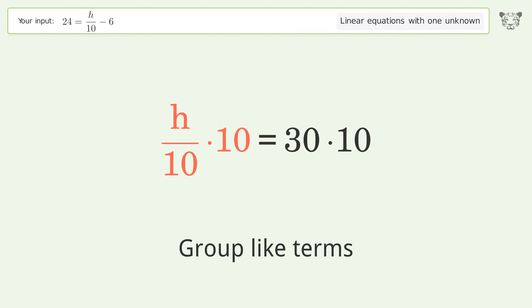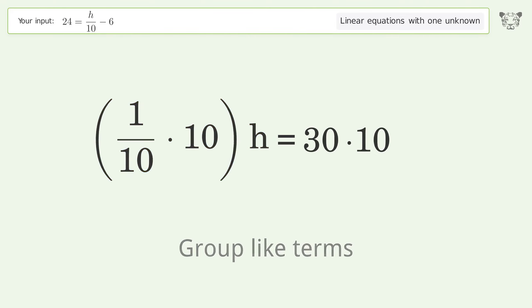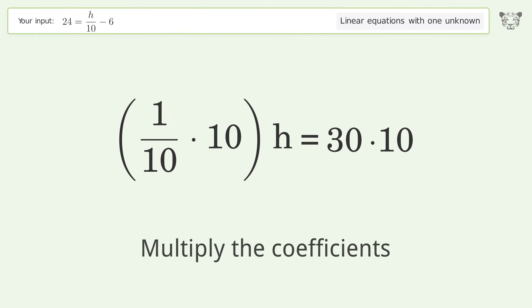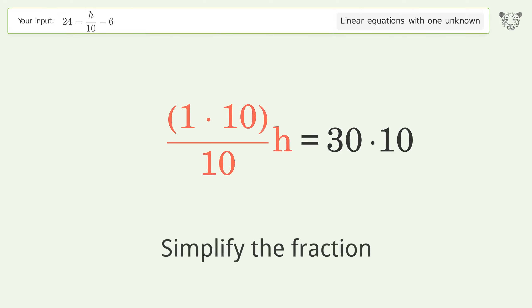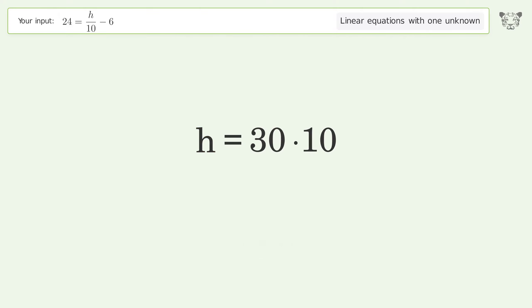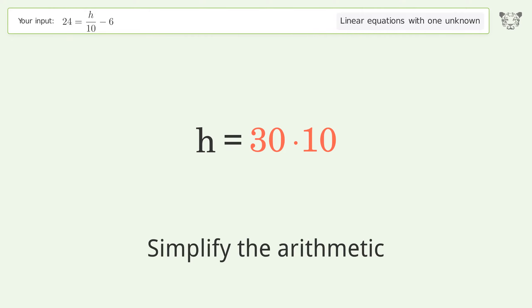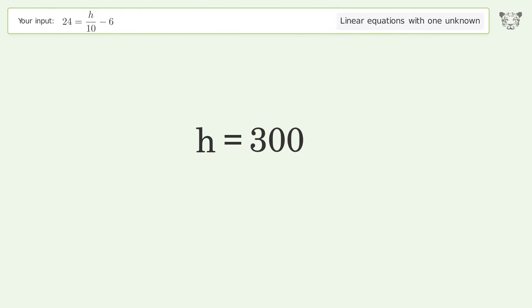Group like terms. Multiply the coefficients. Simplify the fraction. Simplify the arithmetic. And so the final result is h equals 300.